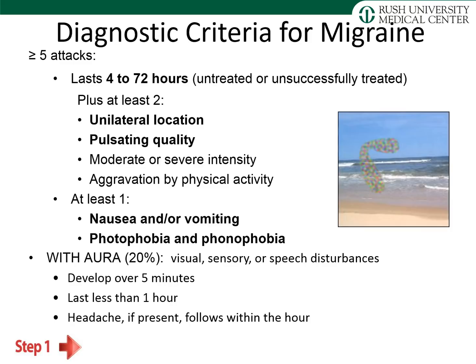Approximately 20% of migrainers will have aura, which can be almost any neurological symptom localizing to the central nervous system. Most frequently, you'll hear complaints of visual changes, sensory loss, or speech disturbances. Aura tends to develop over five minutes and lasts less than one hour. Headache may or may not follow the aura — some patients have aura without head pain. If head pain occurs, it typically follows the aura within one hour. A scintillating scotoma — a moving or flashing field cut — is characteristic of migraine.